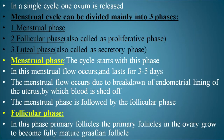The menstrual cycle can be divided mainly into three phases. The first phase is the menstrual phase. The second phase is the follicular phase, also called the proliferative phase. The third phase is the luteal phase, also called the secretory phase.